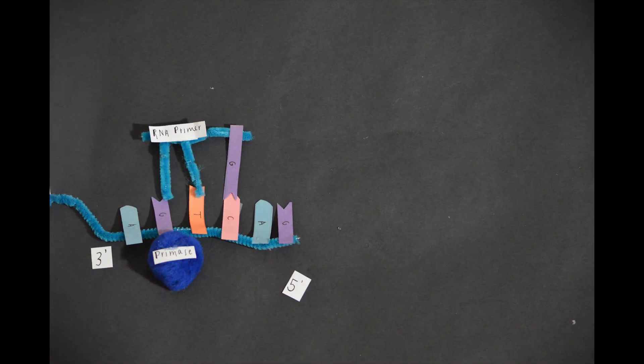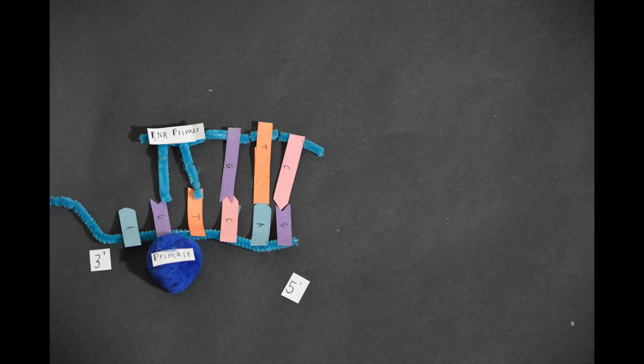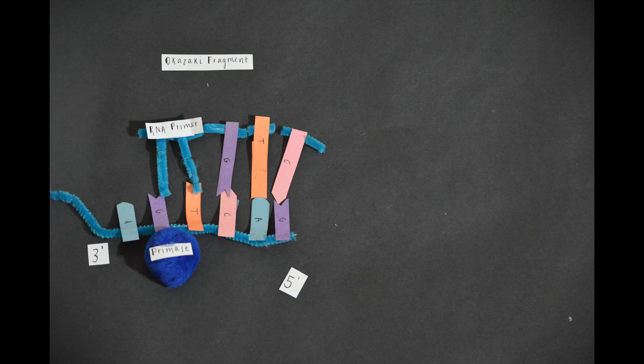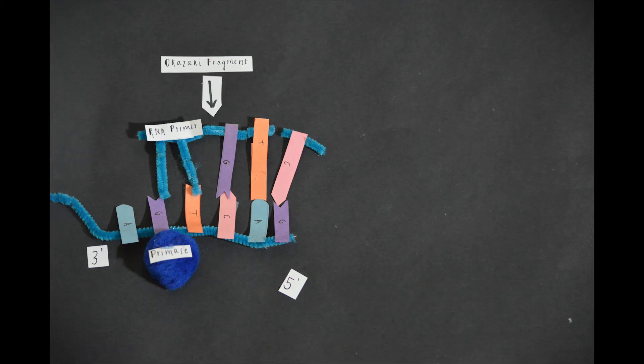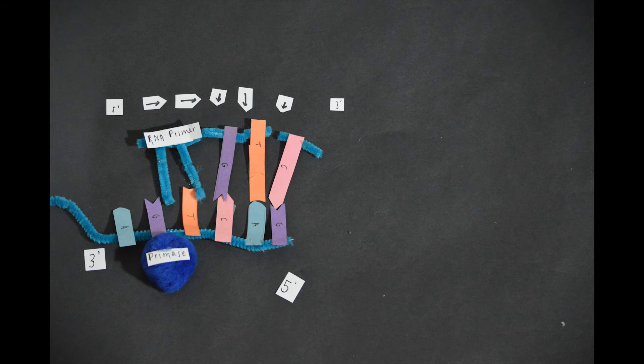To elongate the other new daughter strand of DNA, this replication process grows at the origin. Rather than simply moving continuously and conjoining nucleotides from the parent strand and daughter strand, this process is done in chunks. Each chunk is an Okazaki fragment, and each requires its own primer in order for the polymerase to synthesize each new fragment.